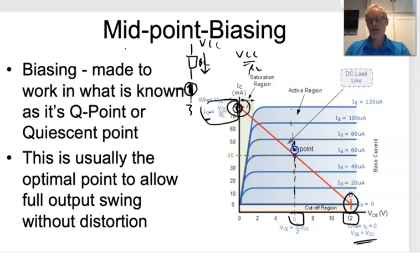What we do then is draw a line, and where these two intersect, that is where if I supply base current of 60 microamps, that's where my output of the amplifier is going to sit. So it's going to be at 6 volts and it's going to be drawing this 40 milliamps.